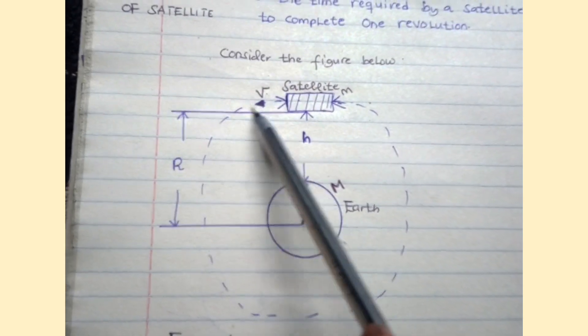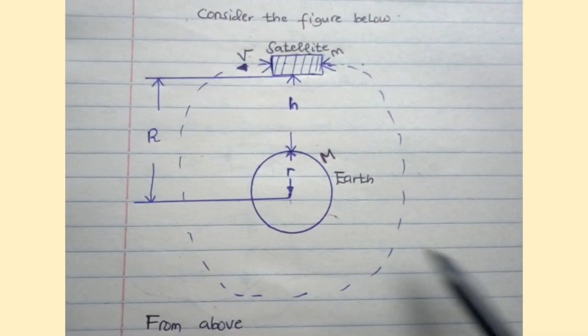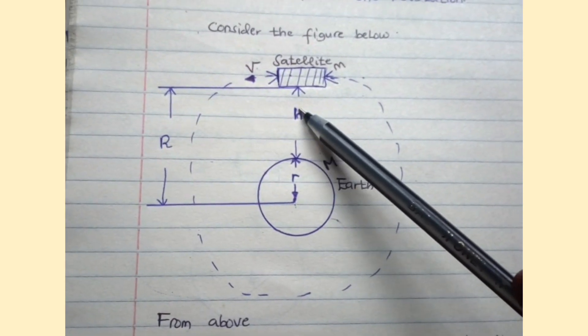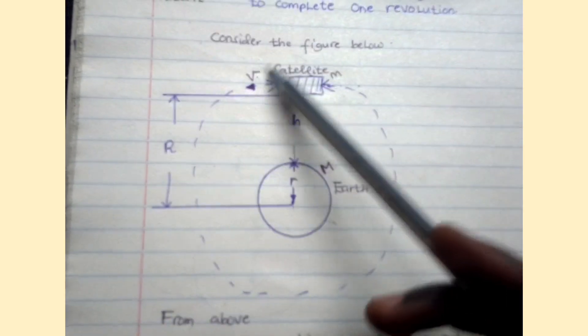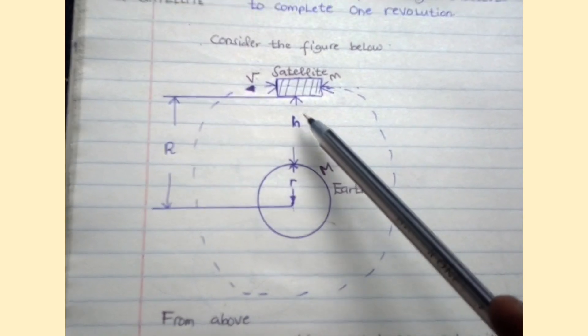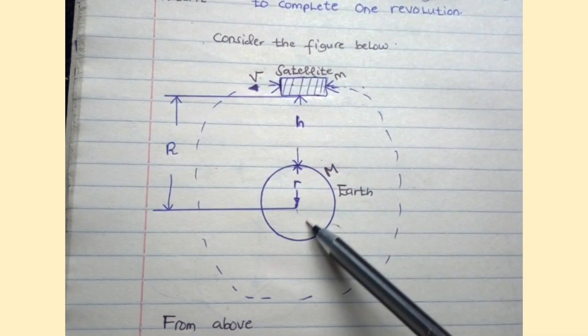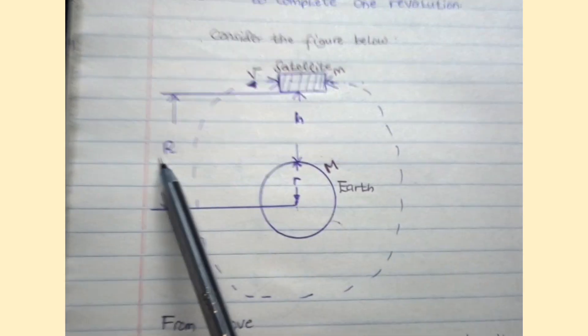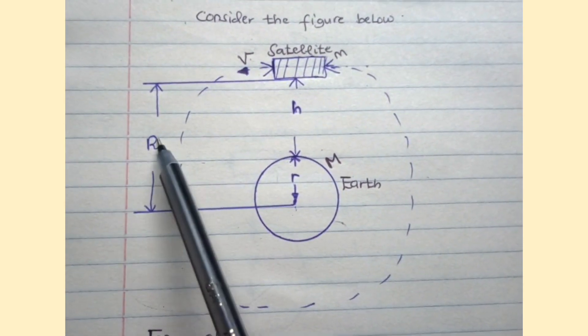Small h is the height from the surface of the Earth to the satellite. The summation of this small h and small r gives capital R, which is the mean distance.